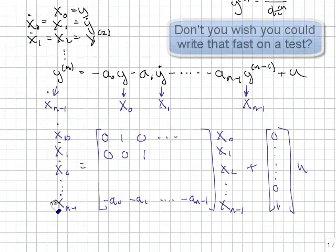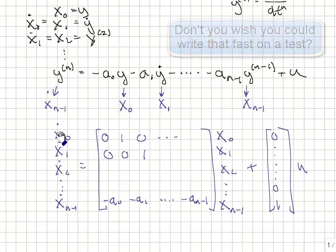And the matrix formulation looks like this. Here is my state variables, and I've taken the derivative of all of them. Be careful, that's x0 dot x1 dot. x0 dot is equal to x1, and that's what my matrix relationship says here. I multiply this row by this column, and all I have is x1. I go on down the line.